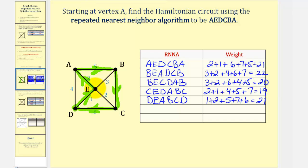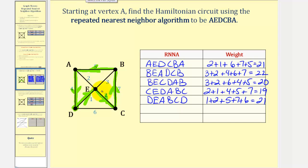For the second circuit starting at D, instead of E to A, we go E to C. From D we visit E, then C, then B, then A, then back to D. The circuit is DECBAD with a total weight of 1 + 2 + 7 + 5 + 4 = 19.